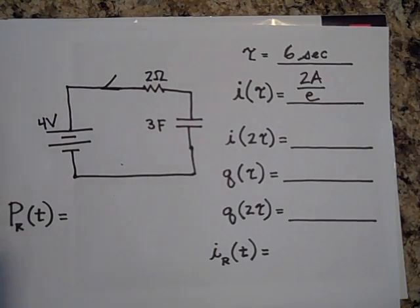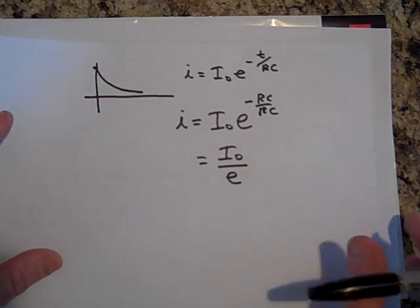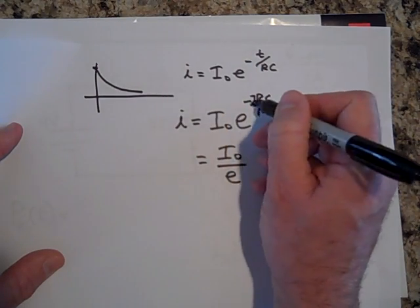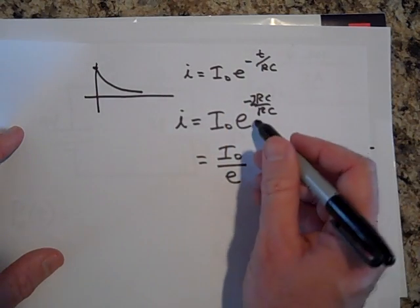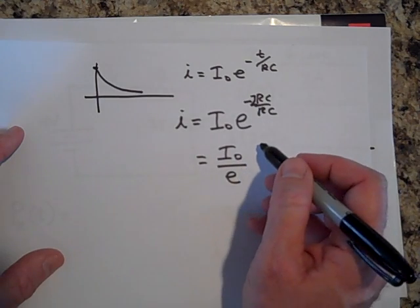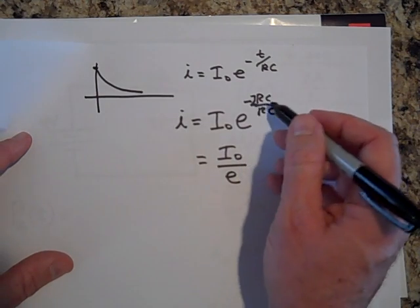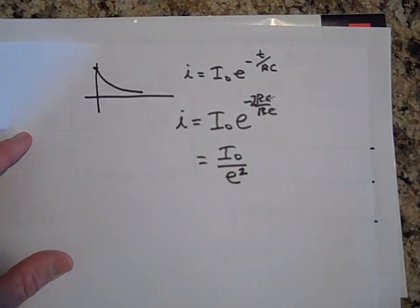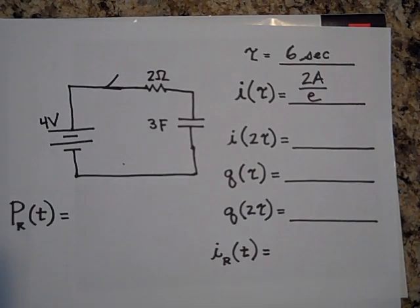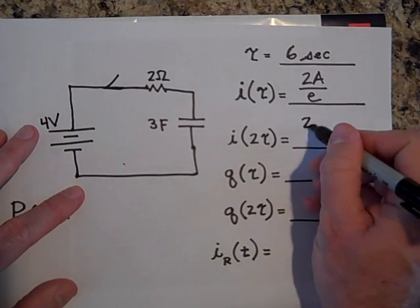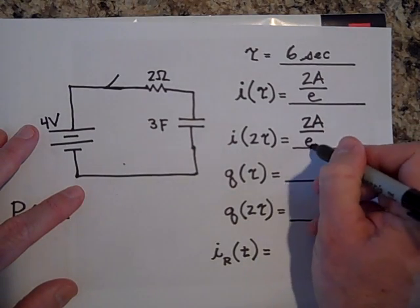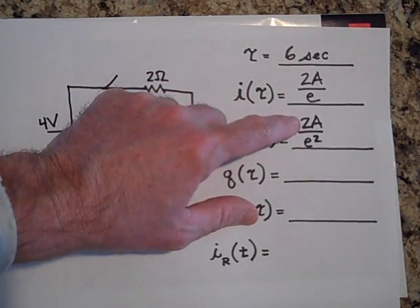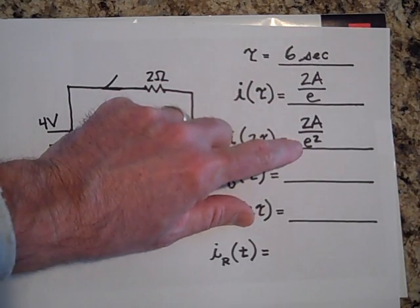How about two time constants? Two time constants, you'd make this two times RC, two times RC. And so that turns into, when you put a two there, that turns into just e^(-2), because the RC's cancel. So it's e^(-2) or I naught over e squared. So this would be two amps over e squared. E is about three. So this is about two thirds of an amp. And this is about two ninths of an amp, because e is about three.